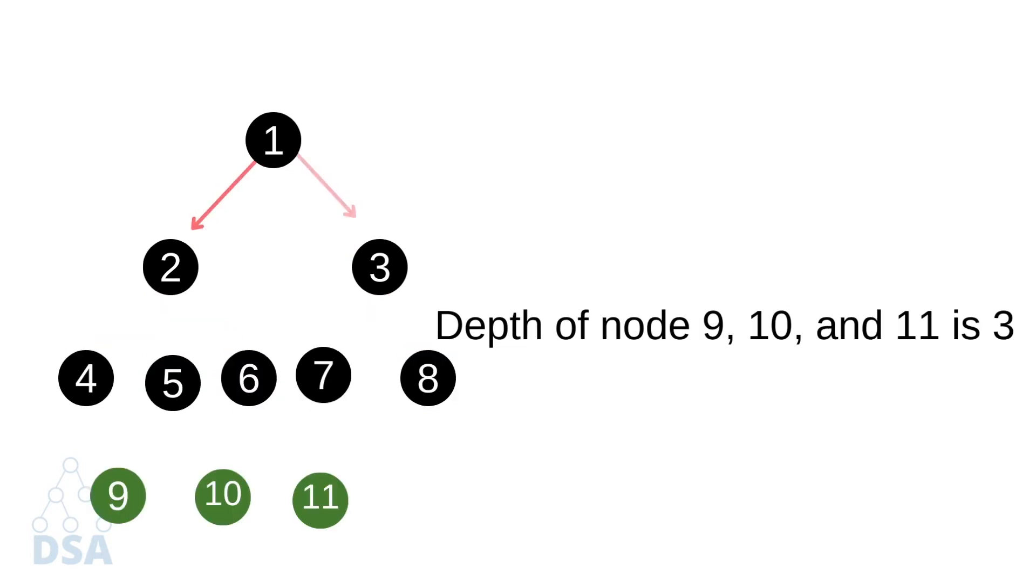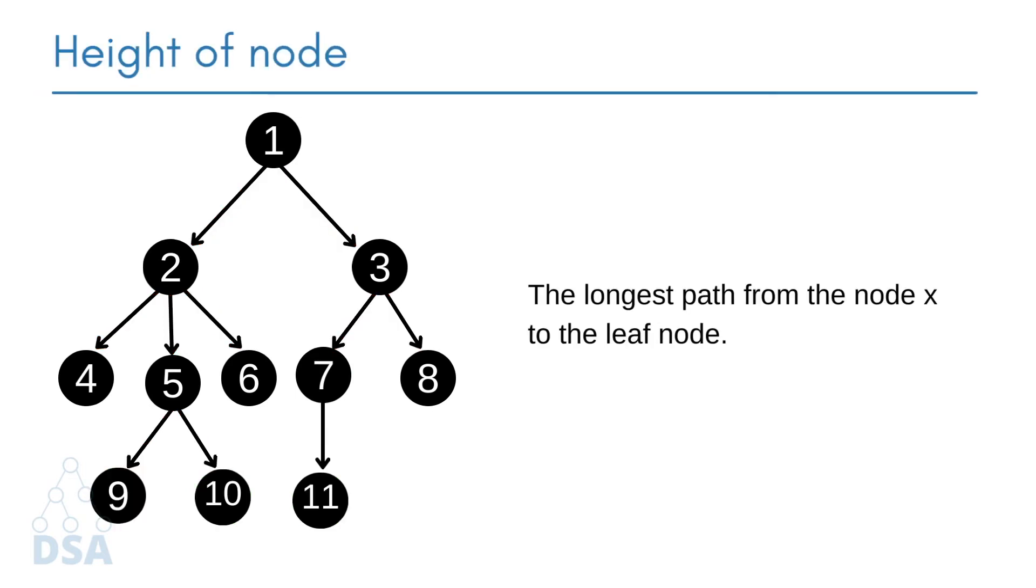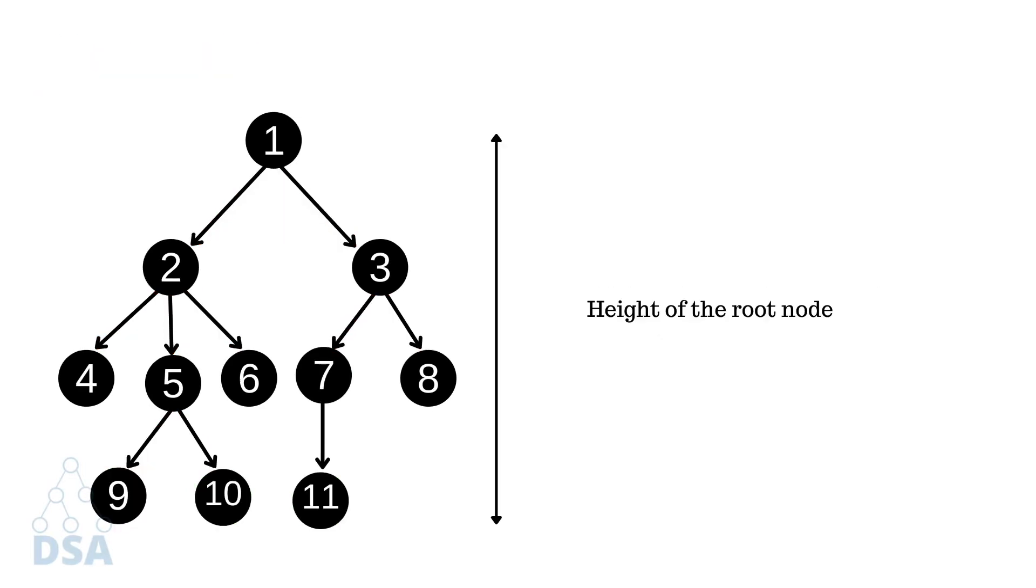And the depth of nodes 9, 10, and 11 is 3. Next is height of node x. The height of node x can be defined as the longest path from node x to a leaf node. The height of the node will be equal to the number of edges in the longest path from x to a leaf.